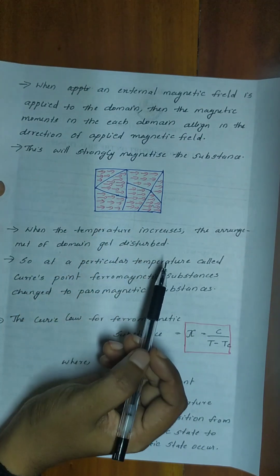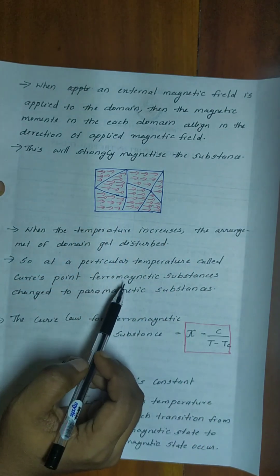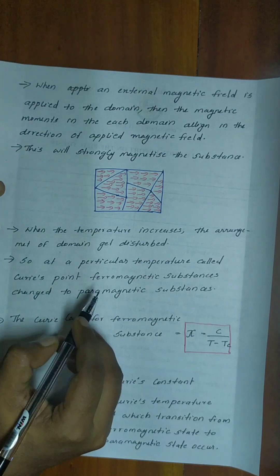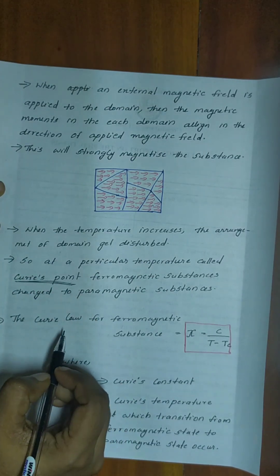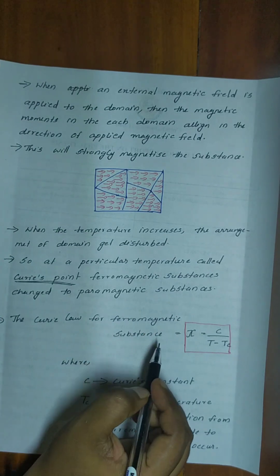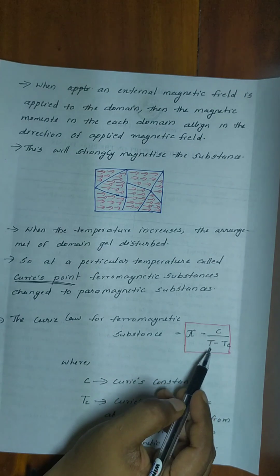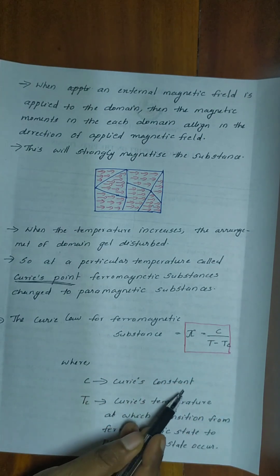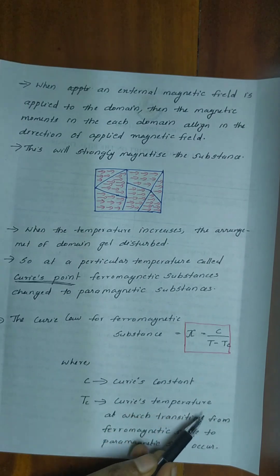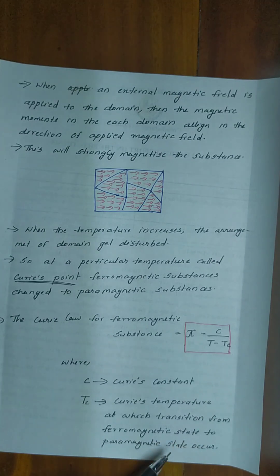At a particular temperature point — Curie's point — the Curie's law for ferromagnetic substances states that magnetic susceptibility is equal to C divided by (T minus Tc), where C is Curie's constant and Tc is the Curie's temperature at which transition from ferromagnetic state to paramagnetic state occurs.